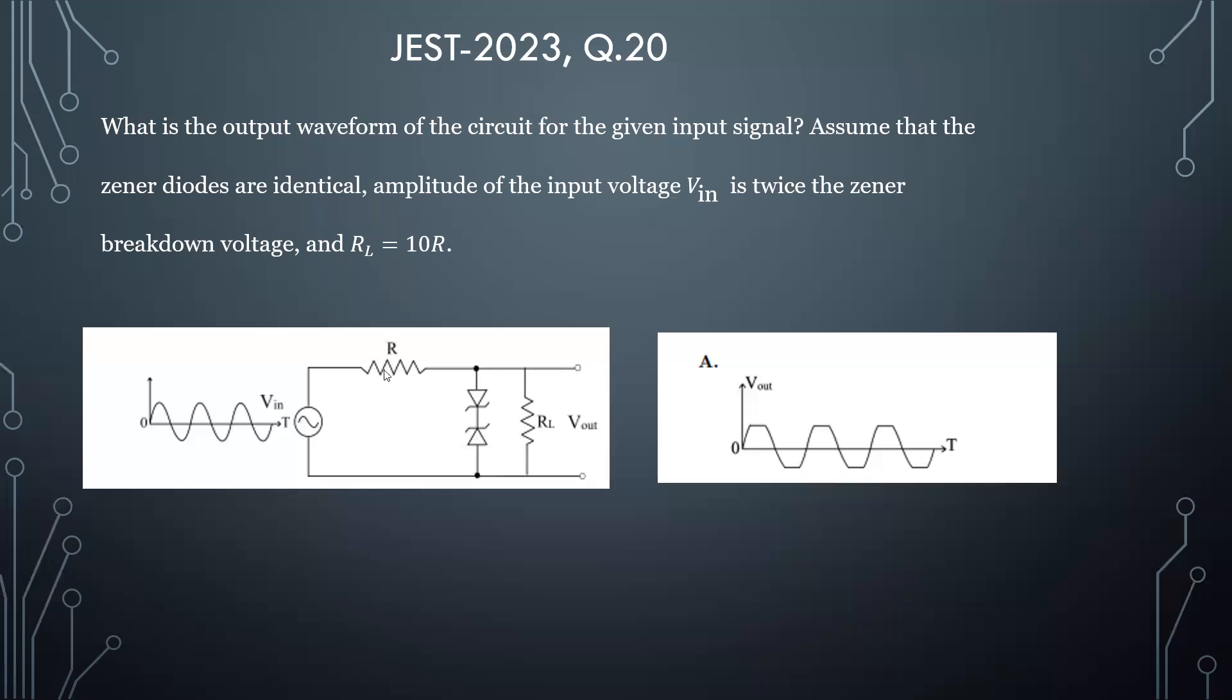Current will move from R to RL. Now RL is 10 times of R, so most of the voltage will be dropped across RL. So your output signal will be the same as your input signal.